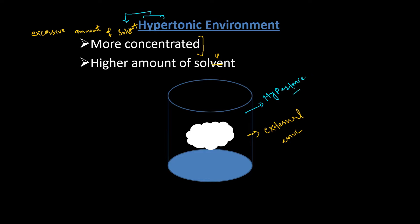Hypertonic means more concentration. When the concentration of the external environment is more concentrated, the movement of solute affects the cell and the cell structure is maintained differently.